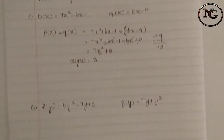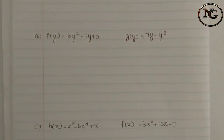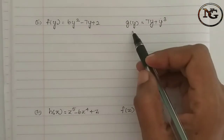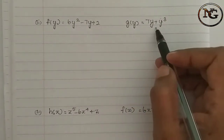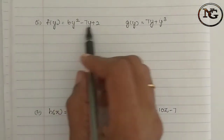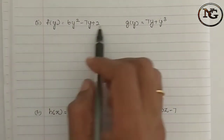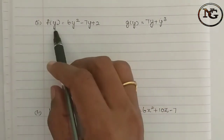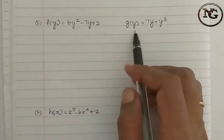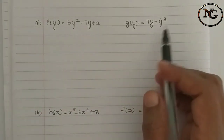Next sum. f of y is equal to 6y squared minus 7y plus 2. Then g of y is equal to 7y plus y cube. You can use the expression with variables y, using f of y and g of y.